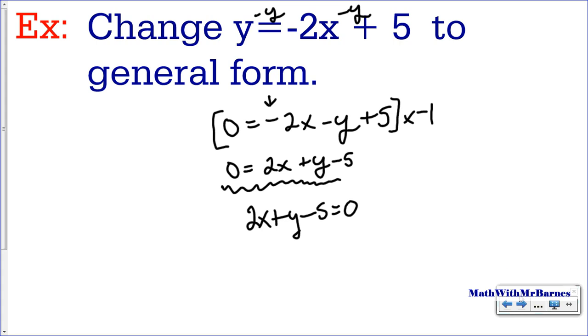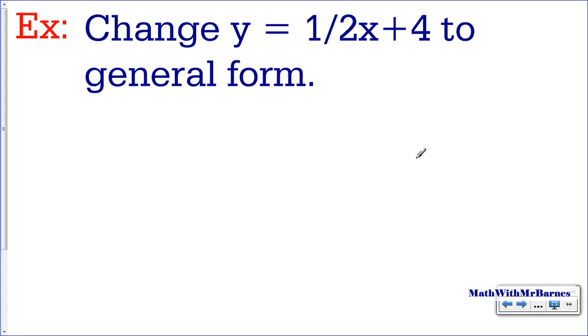Let's look at another one that has some fractions in it. I'll rewrite it. It's 1 half x plus 4. So if I subtract y from both sides, I have 0 equals 1 half x minus y plus 4.